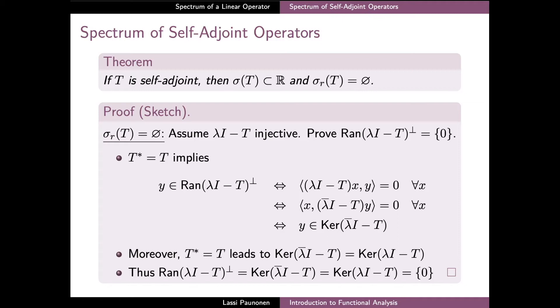In the second part of the proof, we can further use the self-adjointness of T to show that the kernel of the operator, conjugate λI − T, is also equal to the kernel of λI − T, now without the complex conjugate.